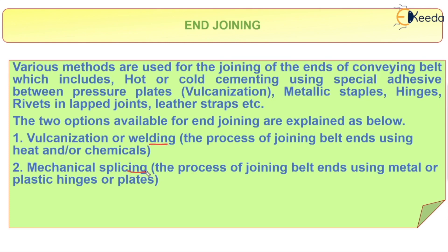In vulcanization or welding, we use heat or chemicals to join the two ends — as we know about the vulcanization process, heat or chemicals are applied to bond the ends together. In the case of mechanical splicing, we have different types of methods and structures.